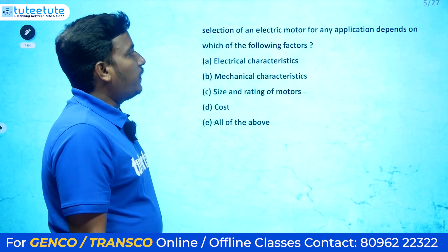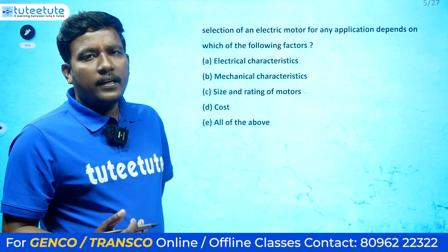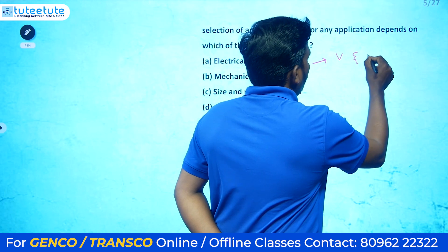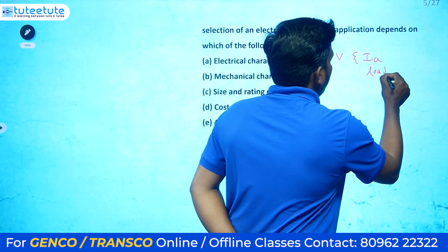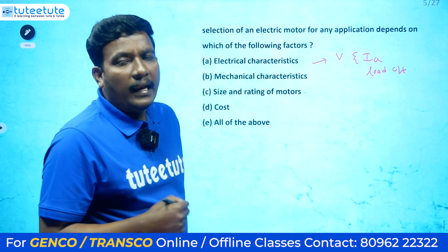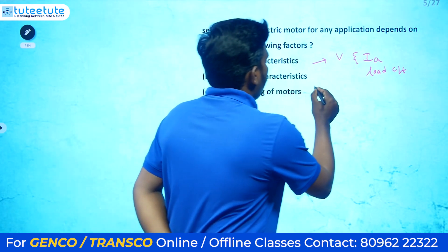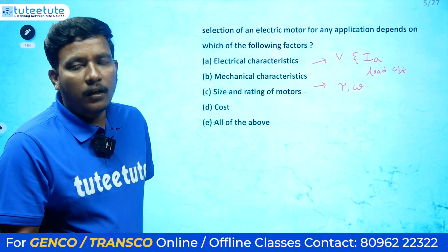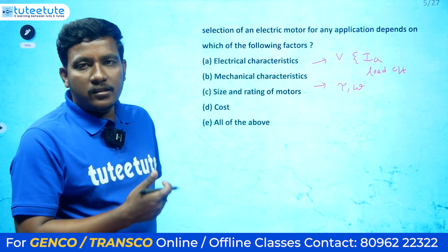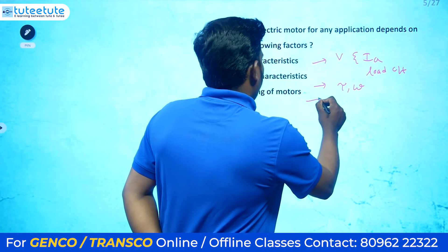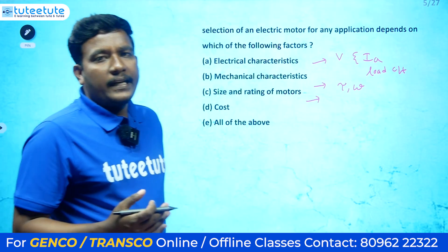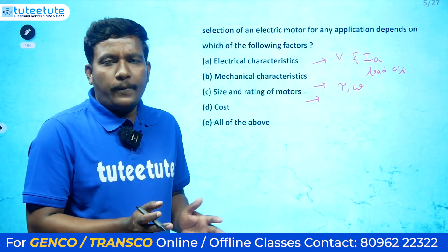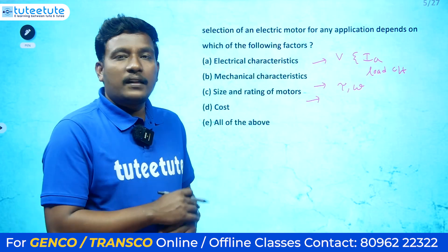Next question: selection of an electric motor for any application depends on which parameters? First, electrical characteristics — that is voltage and load current. Second, mechanical characteristics — torque and speed: whether it requires high starting torque or normal starting torque, and whether constant speed or variable speed is required based on the application.